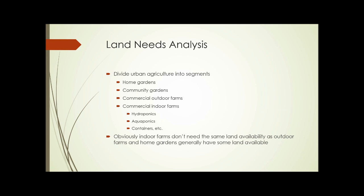To do a land needs analysis, divide urban agriculture into segments: home gardens, community gardens, commercial outdoor farms, and commercial indoor farms — which can be subdivided into hydroponics, aquaponics, containers, etc. Indoor farms don't need the same land availability as outdoor farms, and home gardens generally have some land available since they're at someone's home.